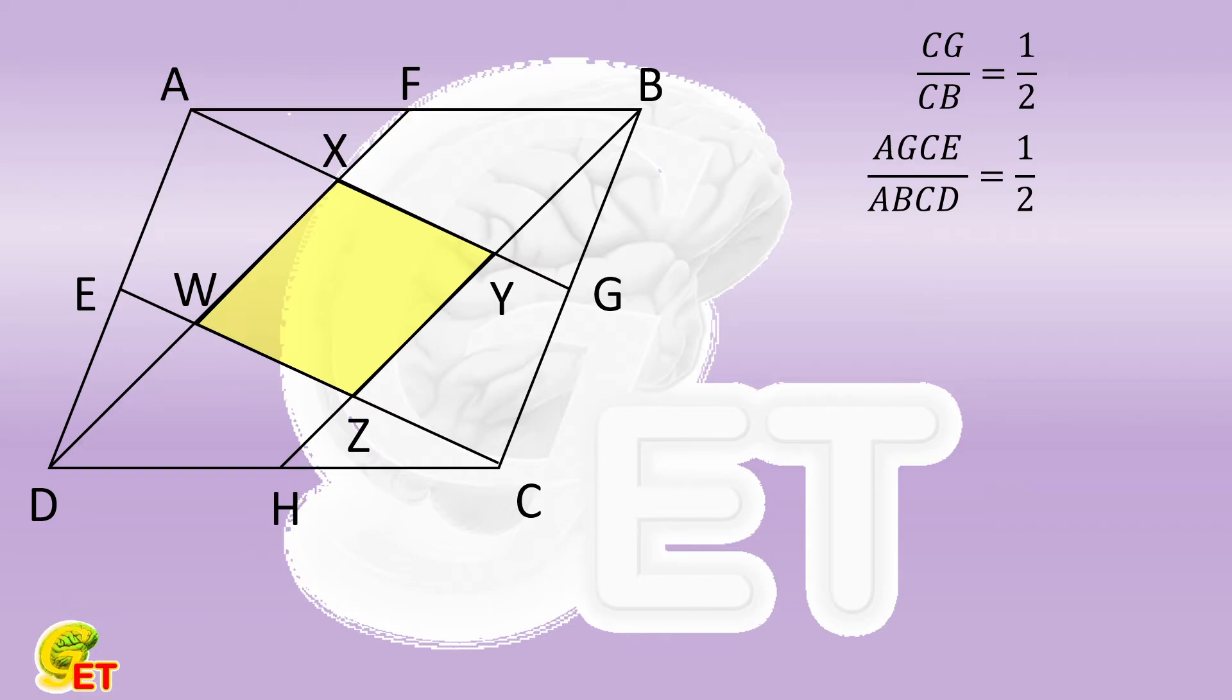We also know the ratio of the area of parallelogram WXYZ to that of AGCE is equal to the ratio of WZ to EC. So all we need to calculate is how big the ratio of WZ to EC is. In the triangle DWC, the side DW is parallel to HZ, and the length of DH is equal to HC. Therefore, HZ is a mid-segment of this triangle. Therefore, WZ is equal to ZC.